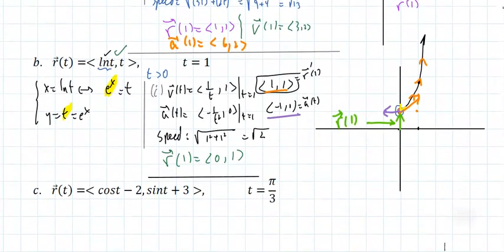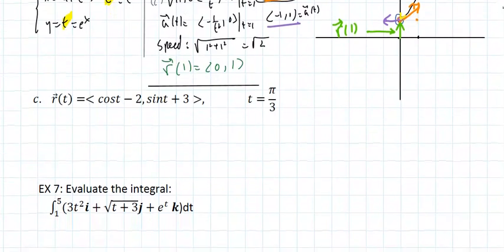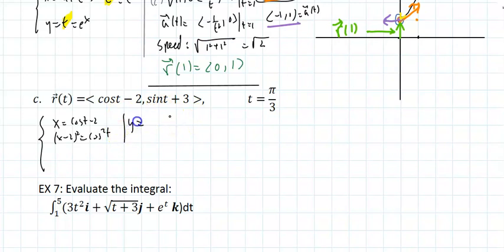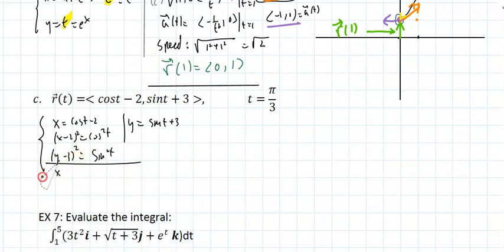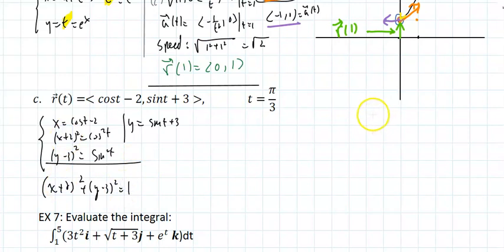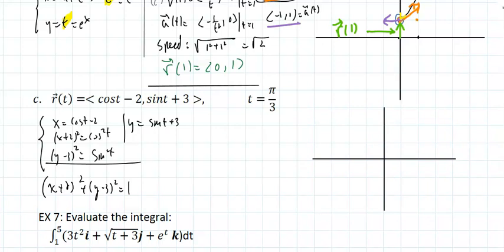One more example. The parametric equation is x = cos(t) − 2, which means (x−2)² = cos²(t), and y = sin(t) + 3, which means (y−3)² = sin²(t). Adding those: (x−2)² + (y−3)² = 1. I know what that is — that's a circle centered at (−2, 3) with a radius of 1.